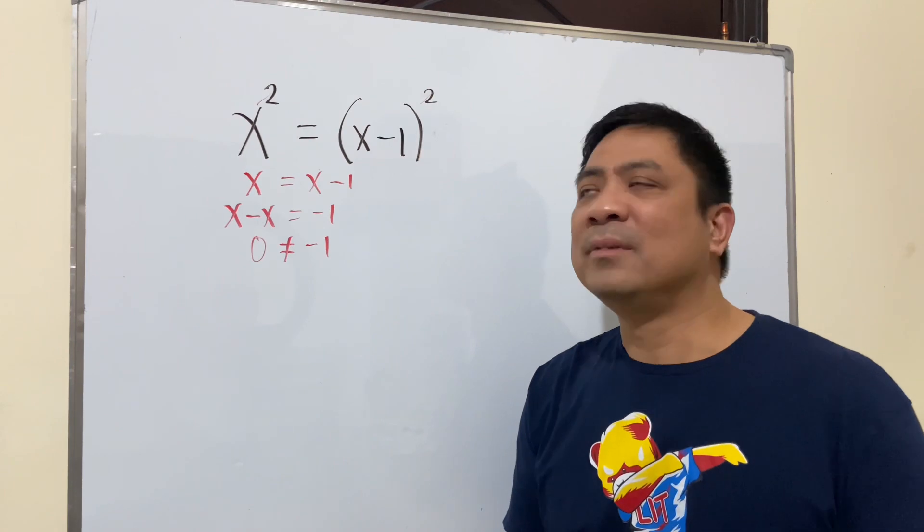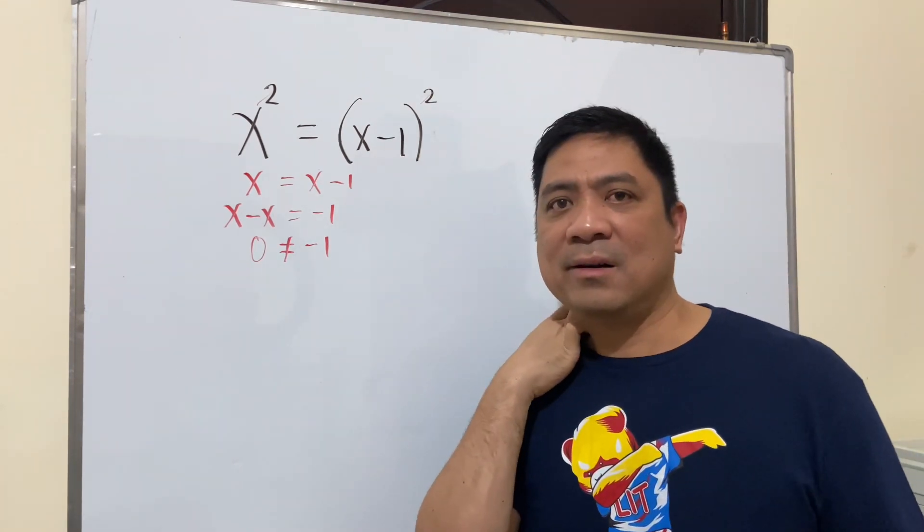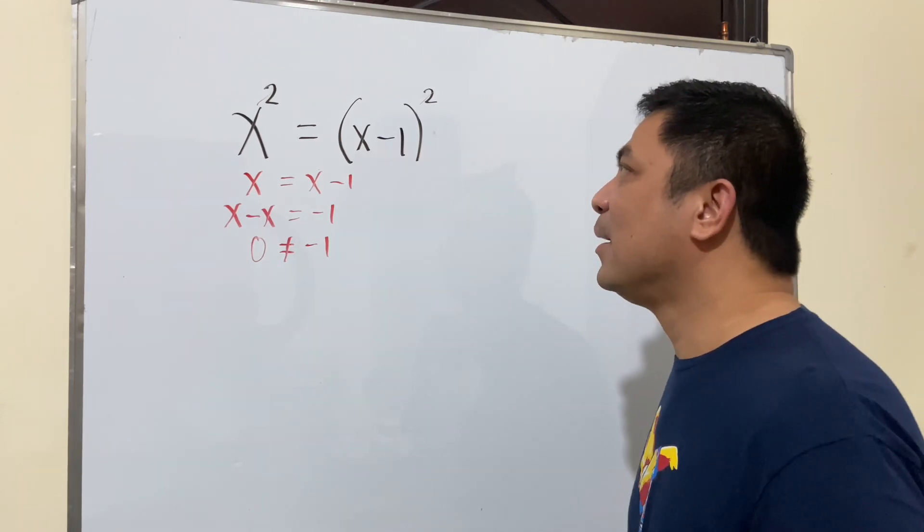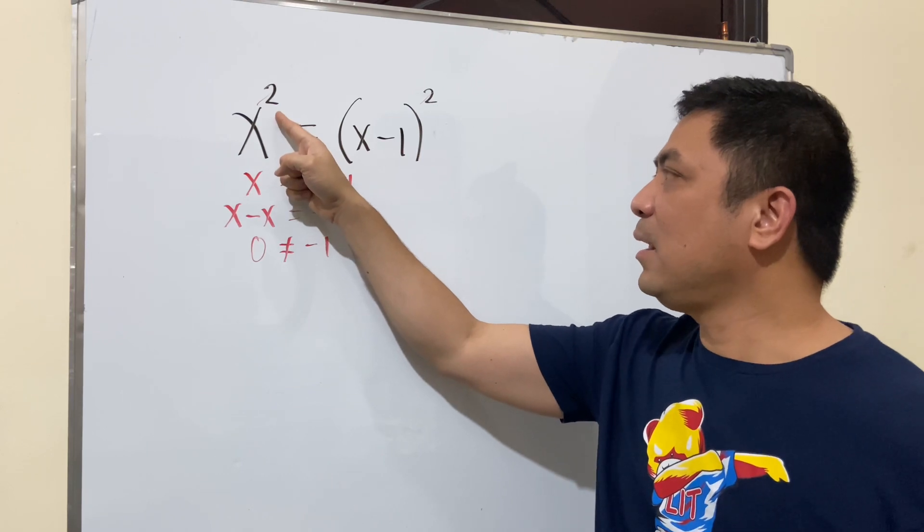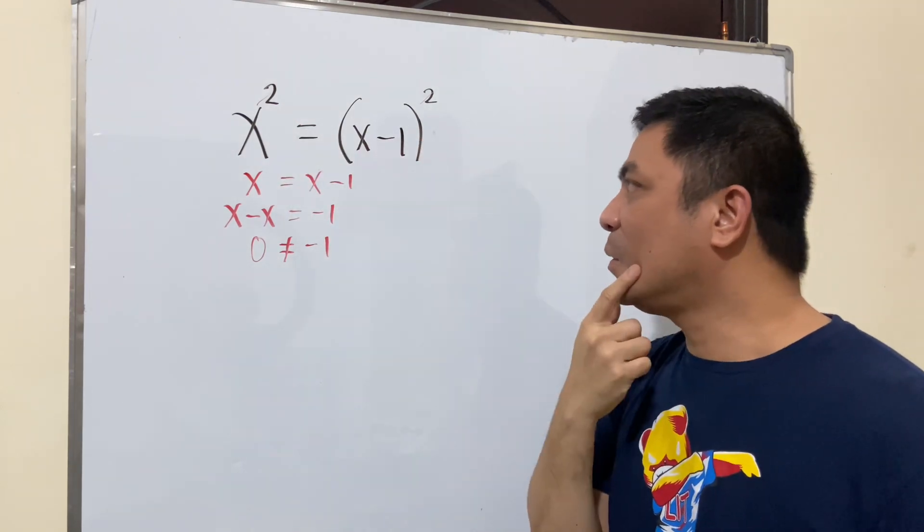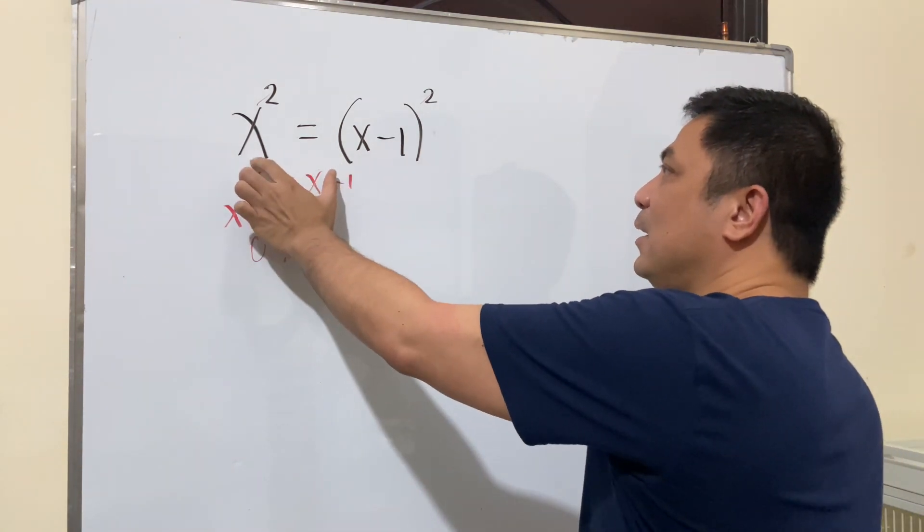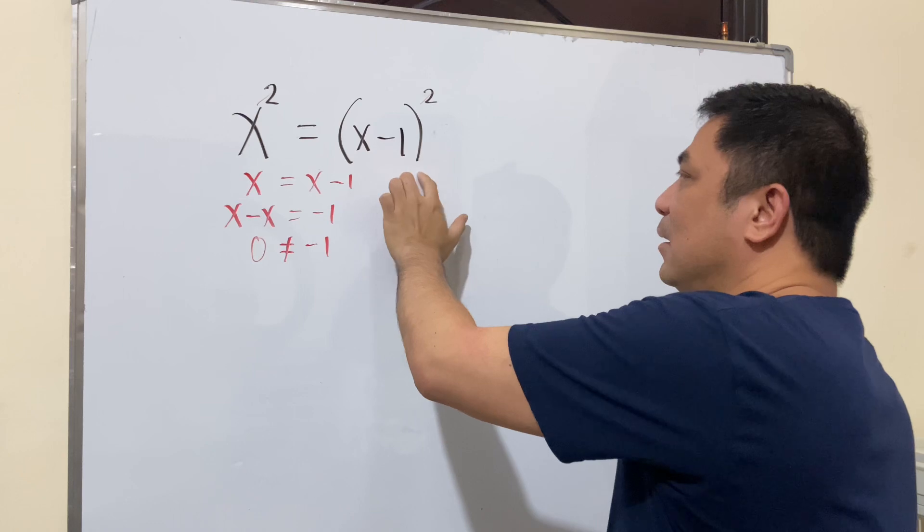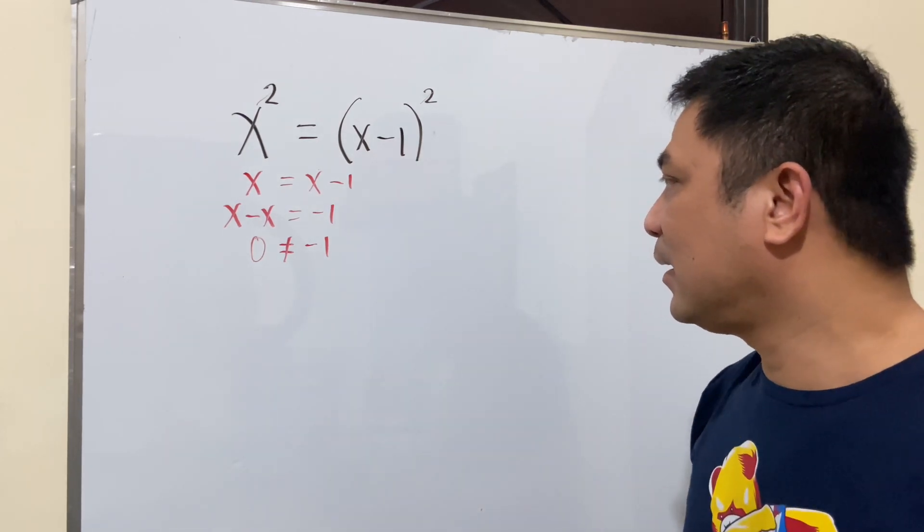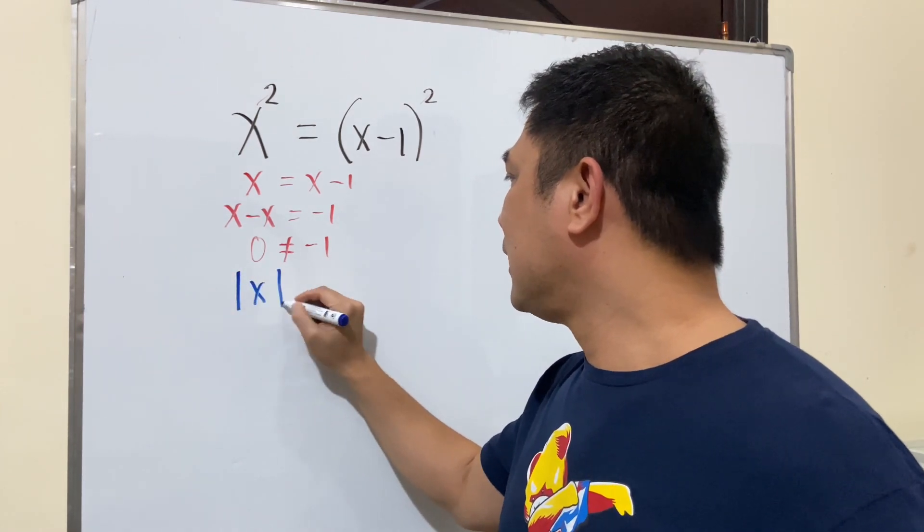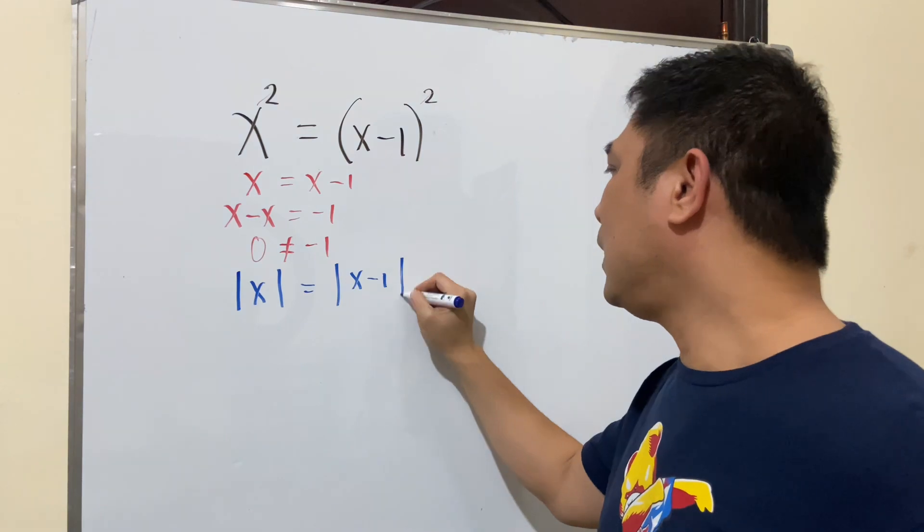So we would arrive and then we would conclude that there's no solution for this particular equation. Okay, but take note that the exponent here is 2 and the exponent here is 2 or an even number. So if the exponent here is even number and also on the other side of the equation is even number, we can say that now that the absolute value of x is equal now to the absolute value of your x minus 1.